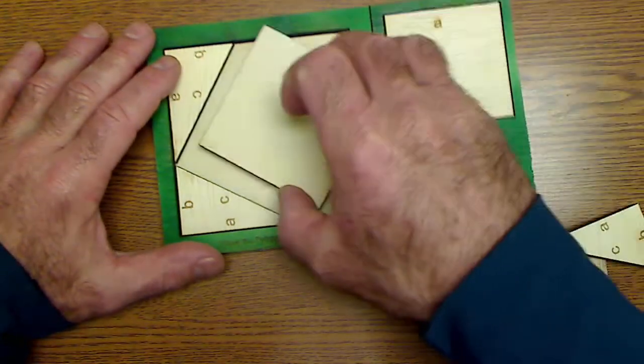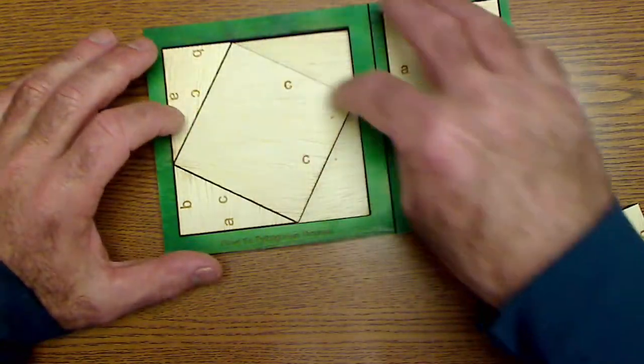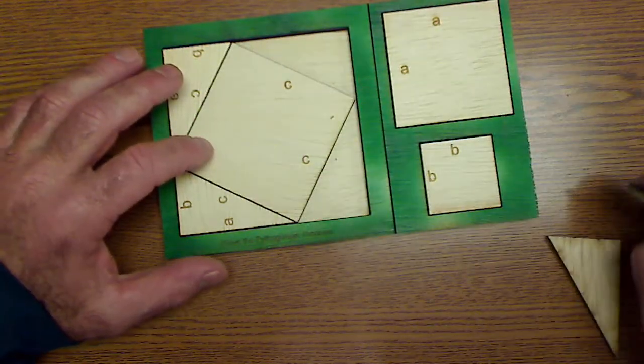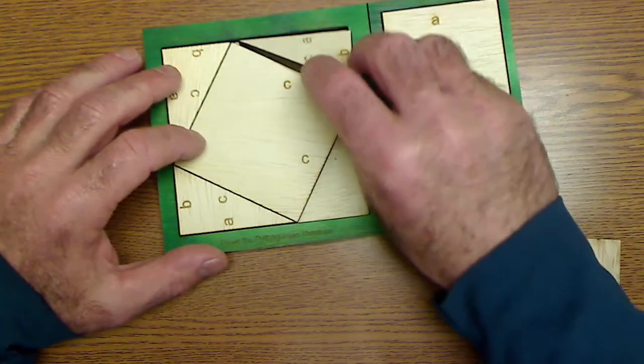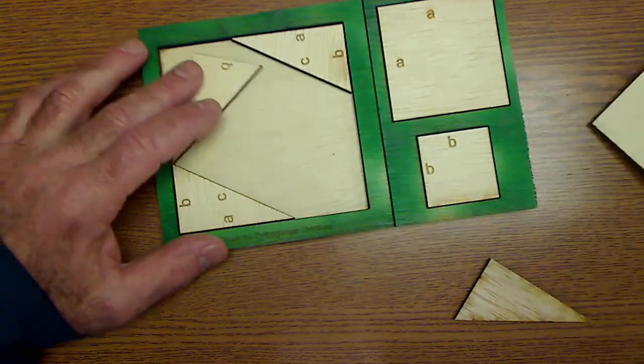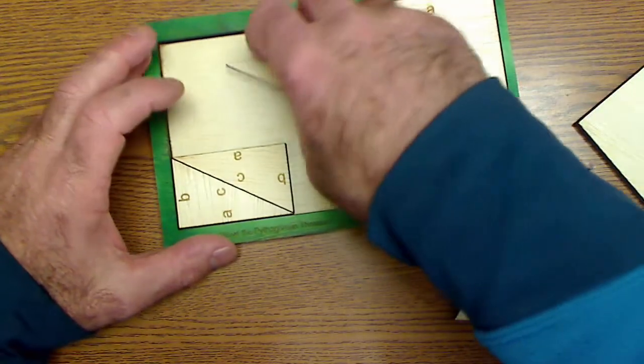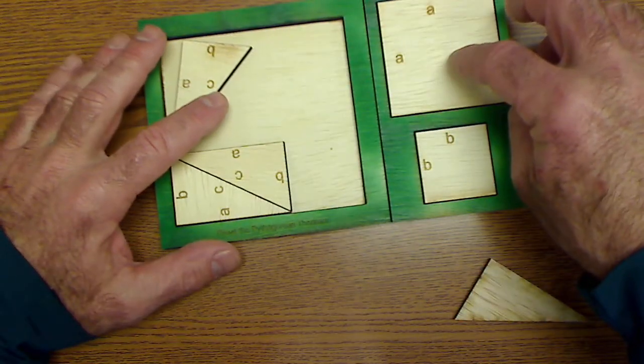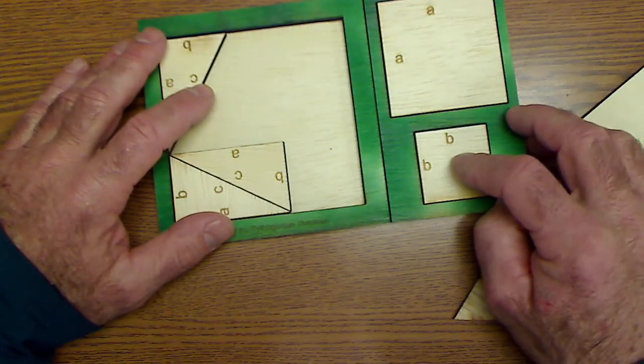So again here's my square. That's C by C, so the area of that square is C squared, and then it fills that whole thing with the four triangles. And when I take it out and put all the triangles together, I could see that A squared plus the B squared equals the C squared.